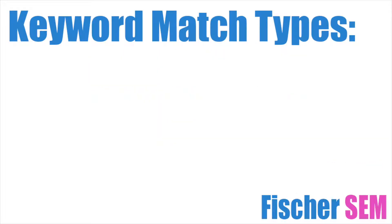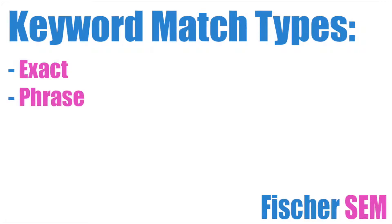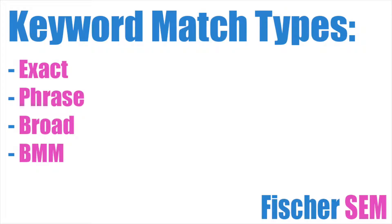There are four different keyword match types that you can use in Google Ads: Exact, Phrase, Broad, and Broad Match Modifier. Here's how you use each.